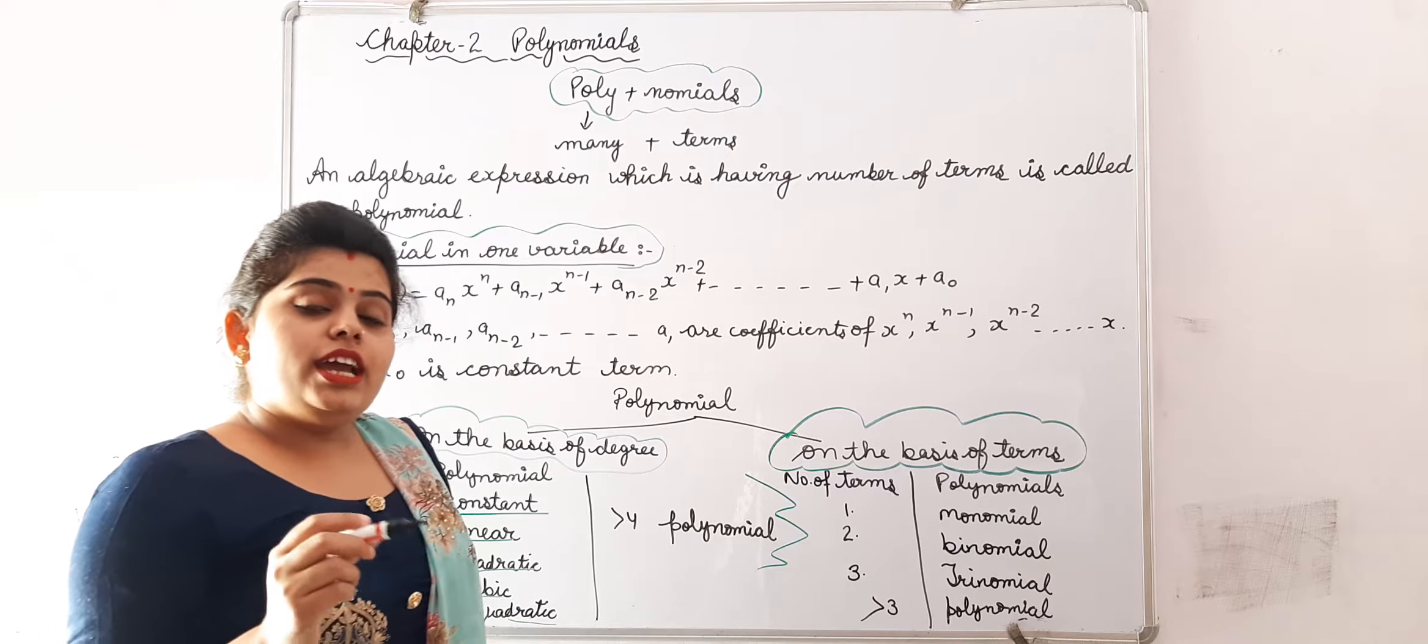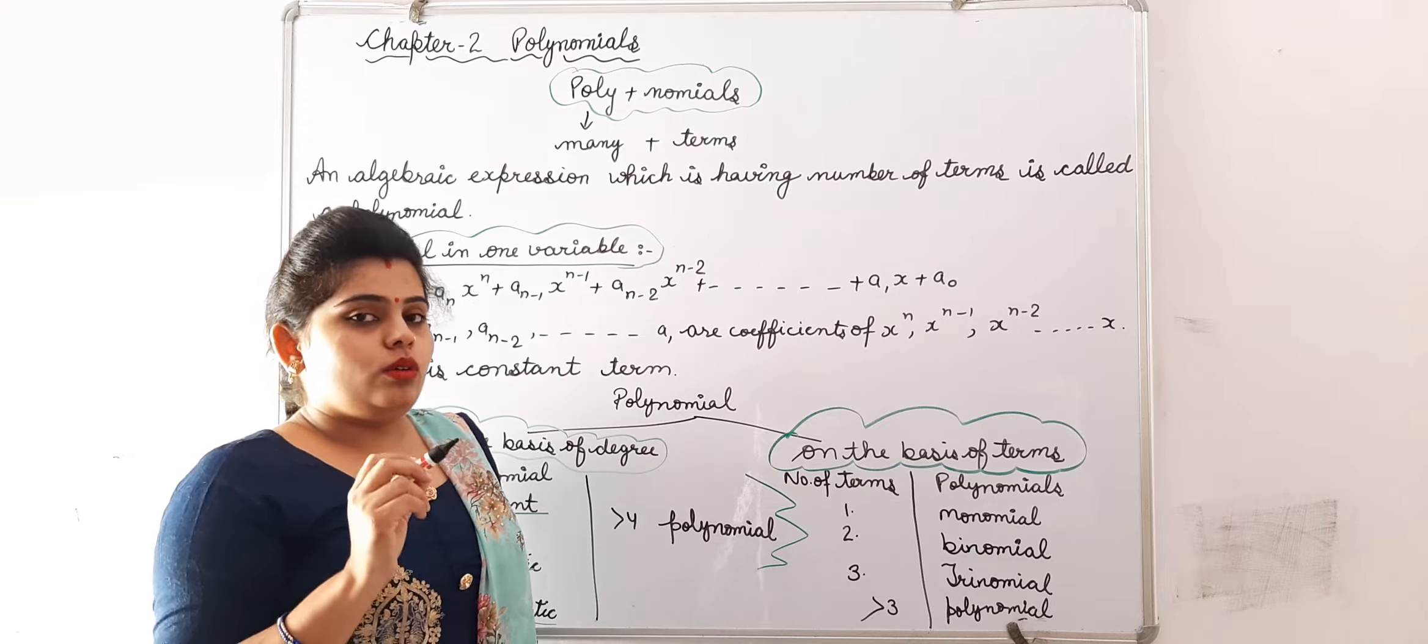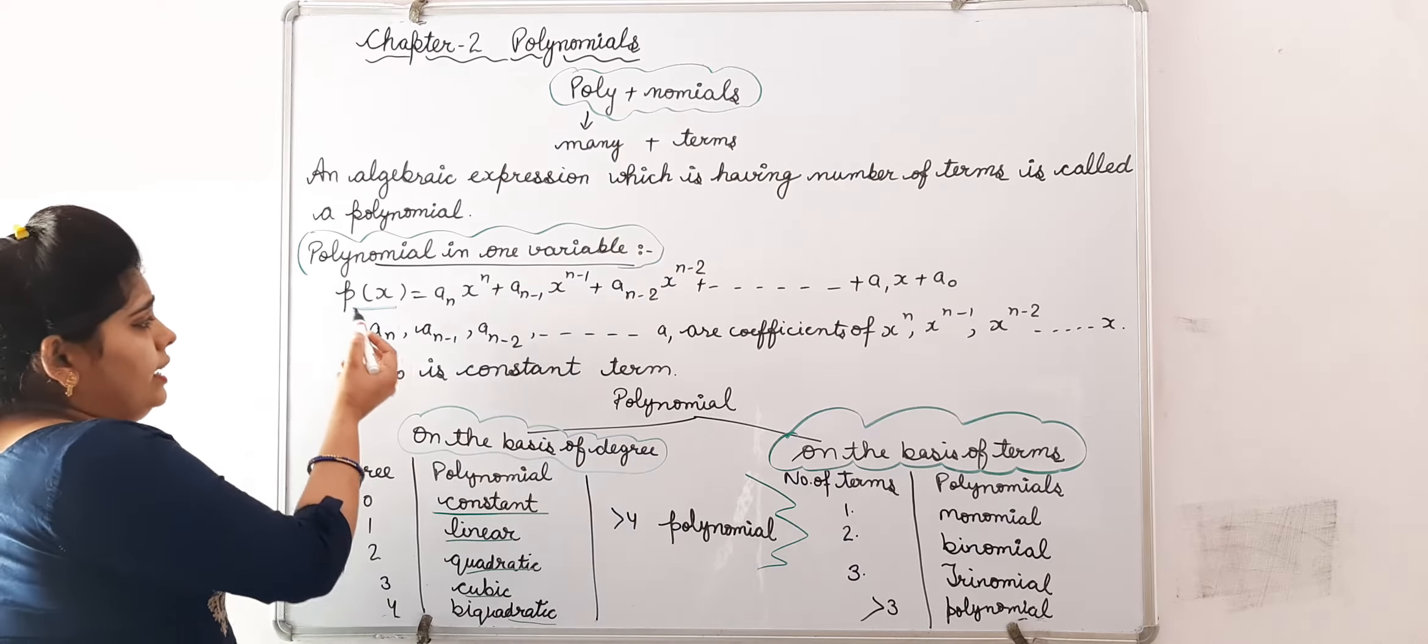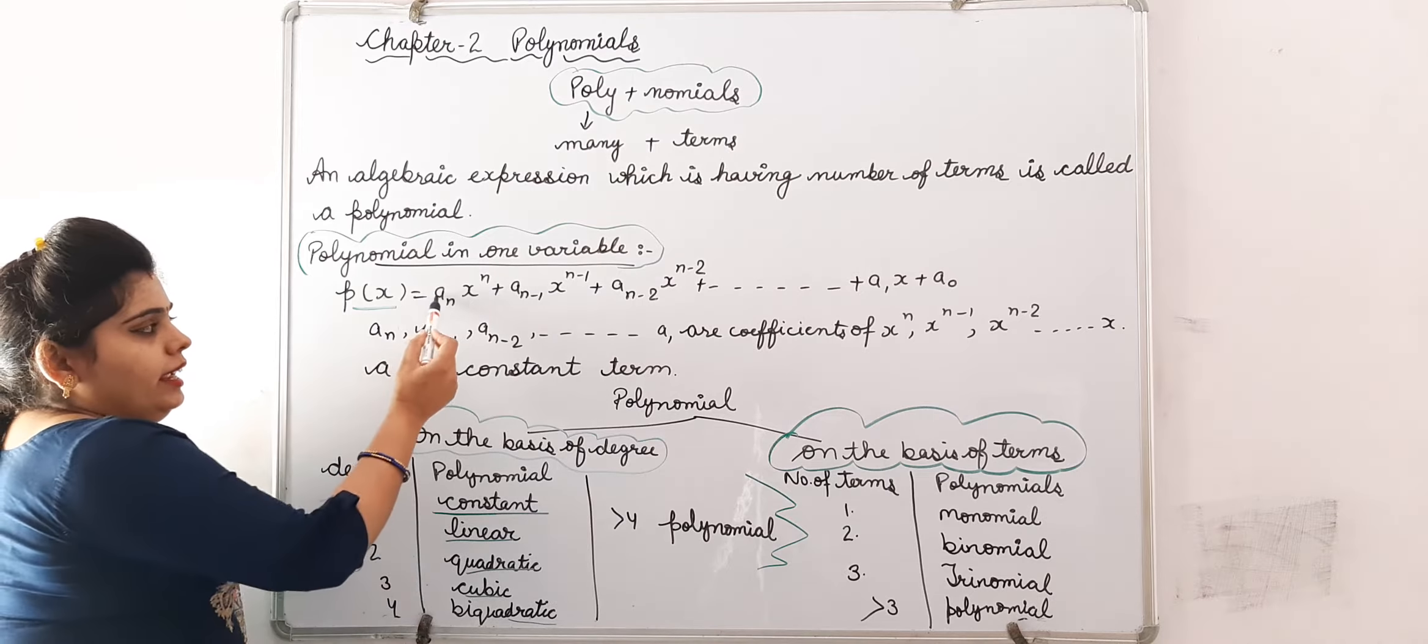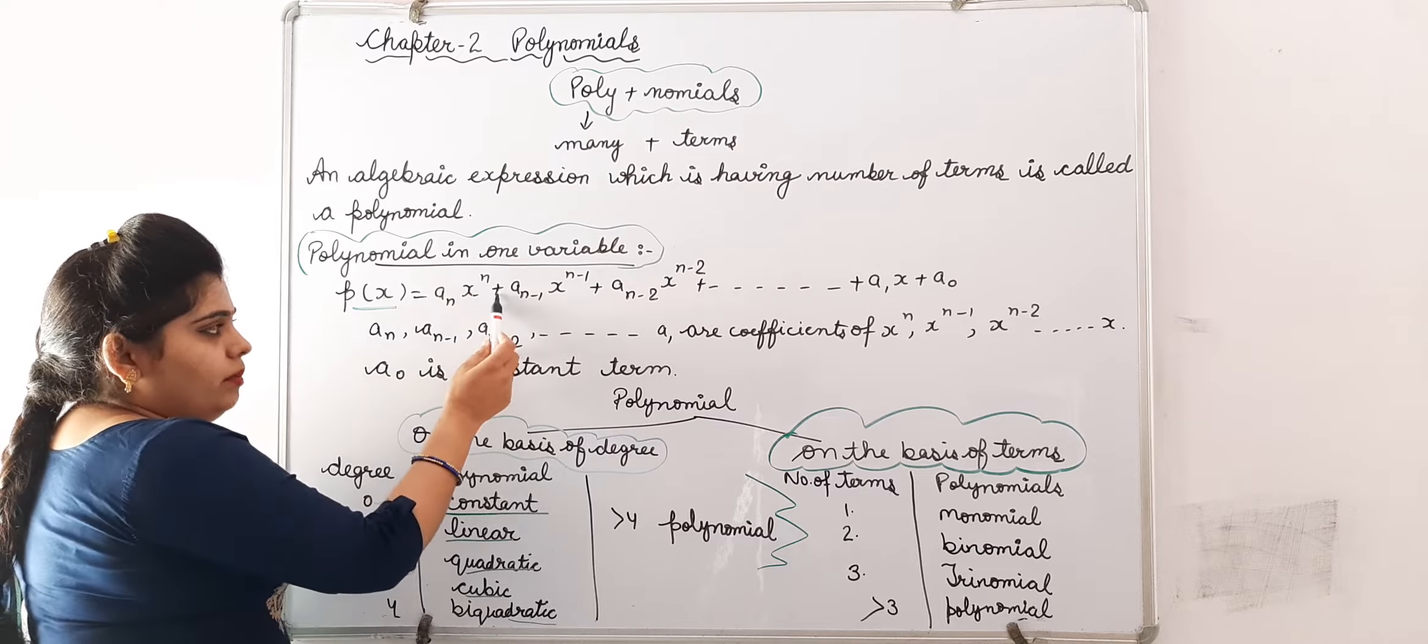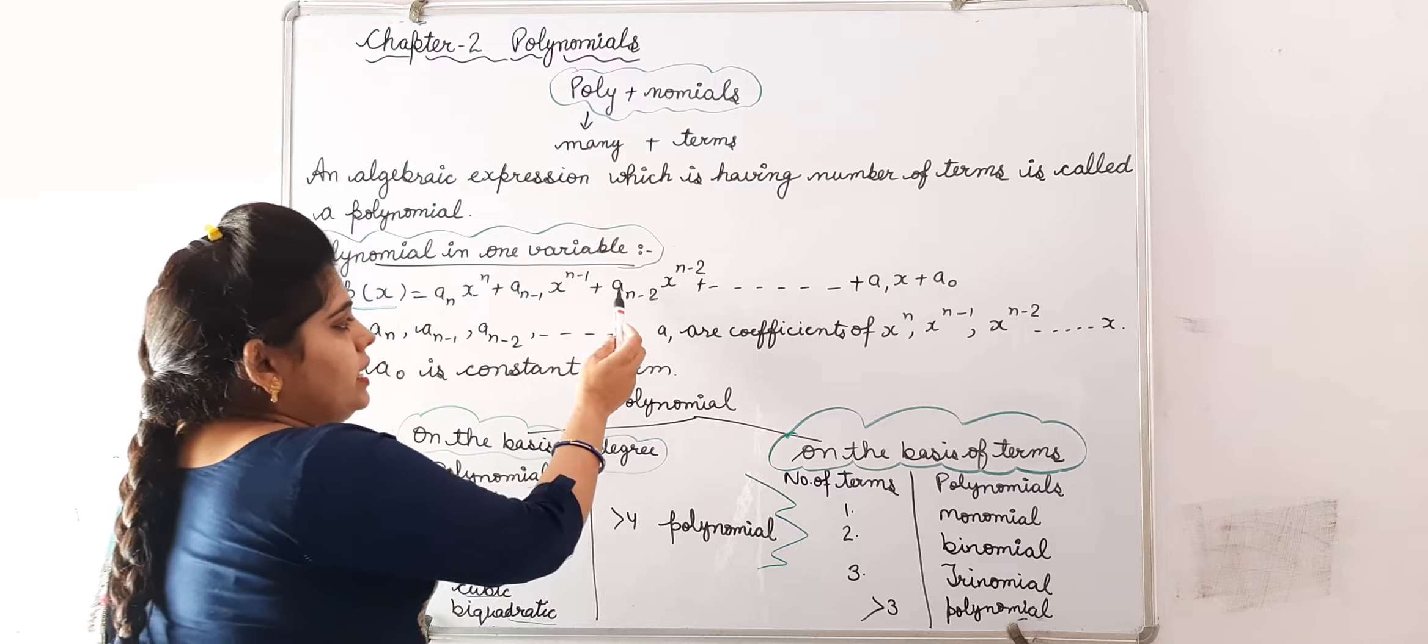But in our syllabus, we are having polynomial in one variable. So we will study that only. Let P of X is a polynomial in one variable. Then, aₙXⁿ plus aₙ₋₁Xⁿ⁻¹ plus aₙ₋₂Xⁿ⁻² up to a₁X plus a₀.